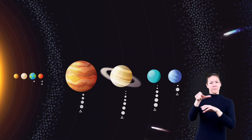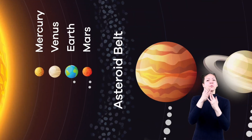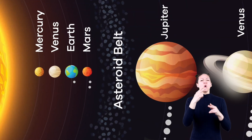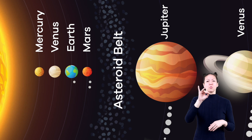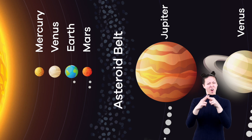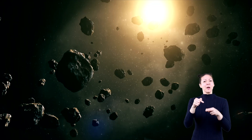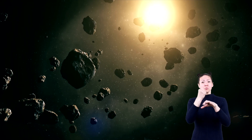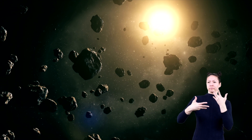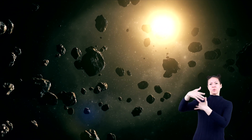Let's talk about the asteroid belt. In an area between Mars and Jupiter lies something called the asteroid belt. That's where most of the asteroids in our solar system hang out while they orbit the sun.